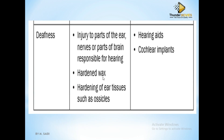Number two is deafness. This can be as a result of injury to the ear, where the nerves or the part of the brain responsible for hearing is damaged. It can also be caused by hard wax — too much wax in the ear — so make sure you clean your ears so that you don't develop that. Another cause is hardening of the ear tissue, such as the ossicles — the bones become hard and cannot move, so they can't cause vibration and you can't hear.